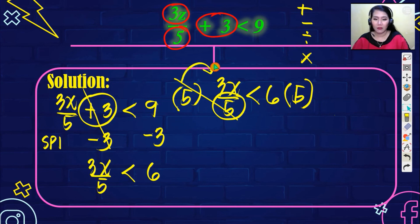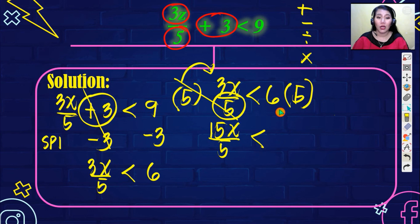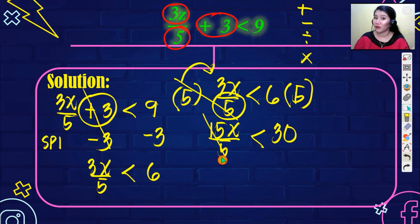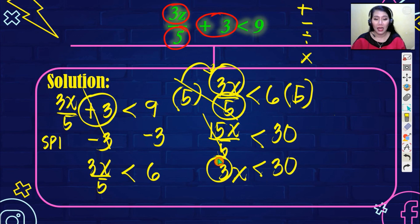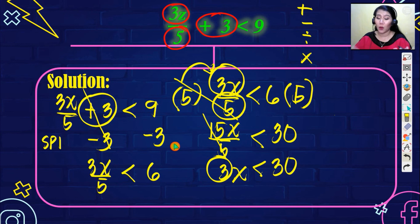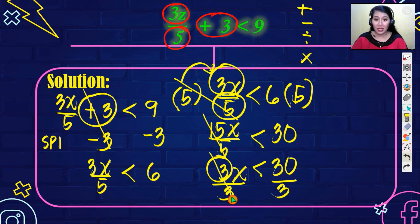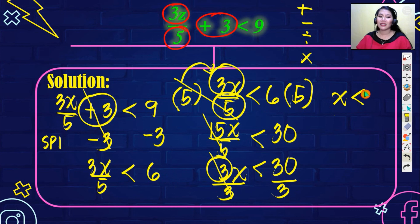Next, to remove the denominator 5, apply MPI — multiply both sides by 5. On the left, 5 times 3z over 5 gives 15z divided by 5. Simplifying, 15 divided by 5 is 3, so we get 3z. On the right, 6 times 5 is 30. Now 3 is next to z — the implied operation is multiplication — so apply DPI. Divide both sides by 3. 3 divided by 3 cancels, leaving z is less than 30 divided by 3, which is 10.